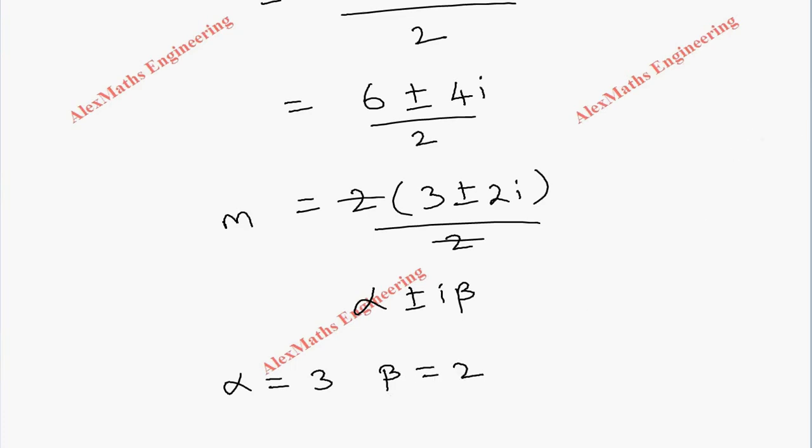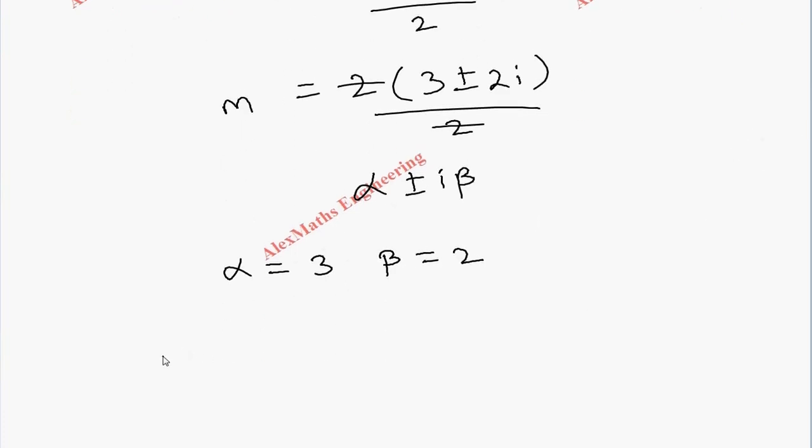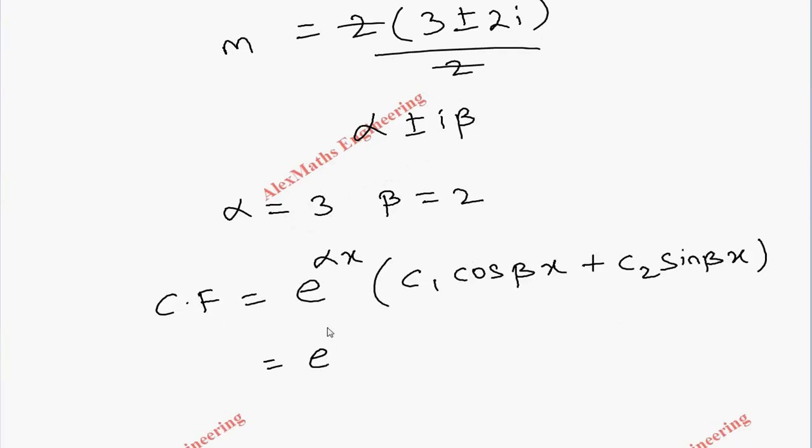In this case where we get a complex value, the complementary function is e^(αx)(c₁cos(βx) + c₂sin(βx)). By placing the values of α and β, we get e^(3x)(c₁cos(2x) + c₂sin(2x)).